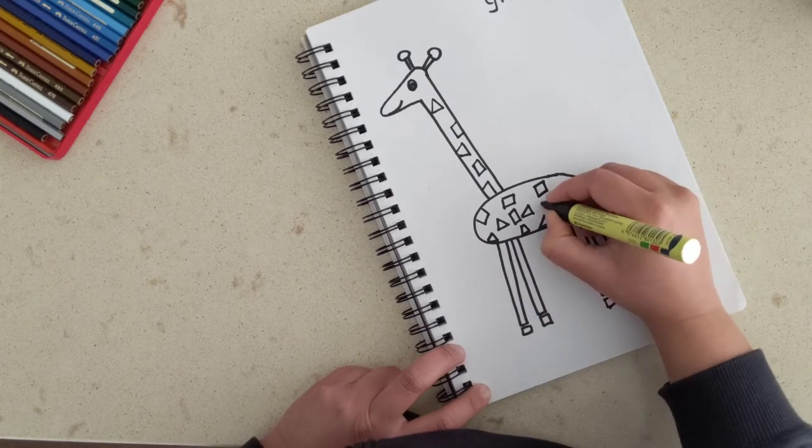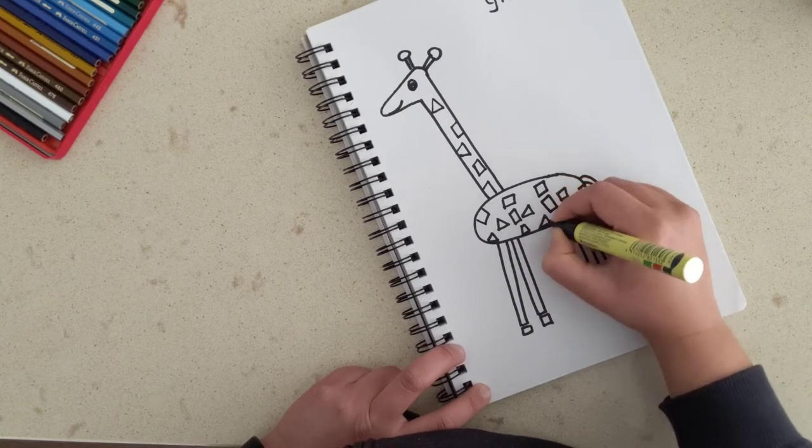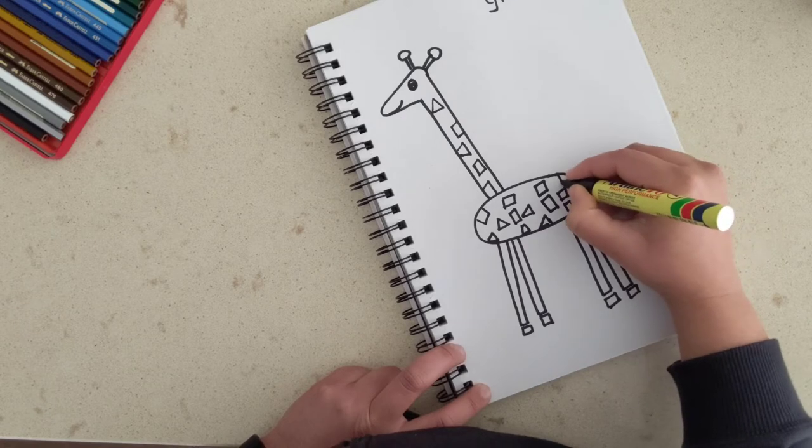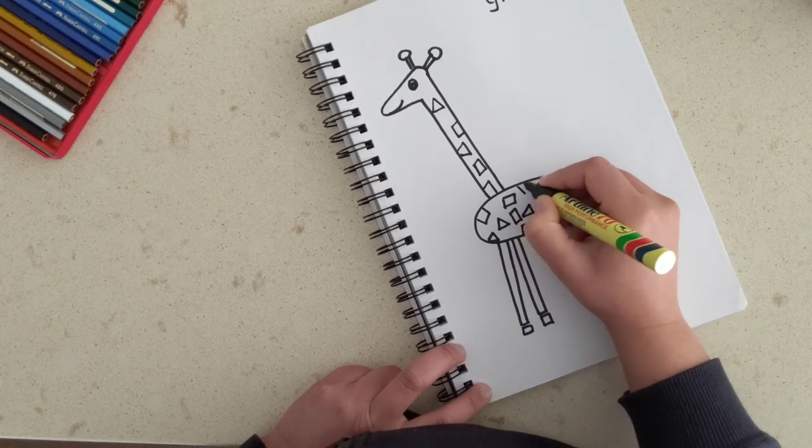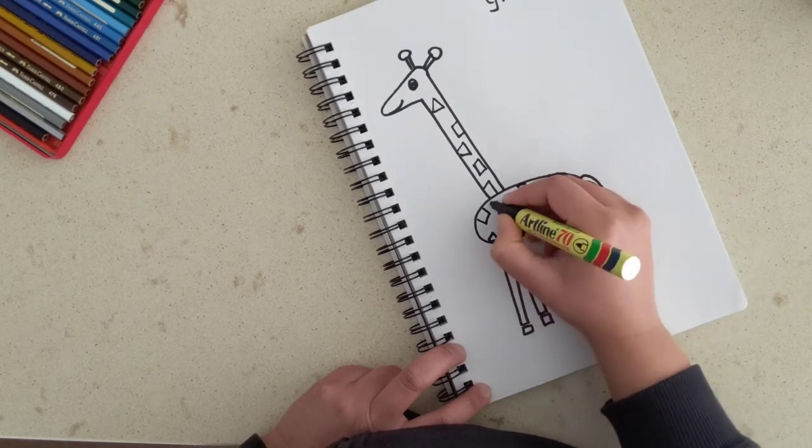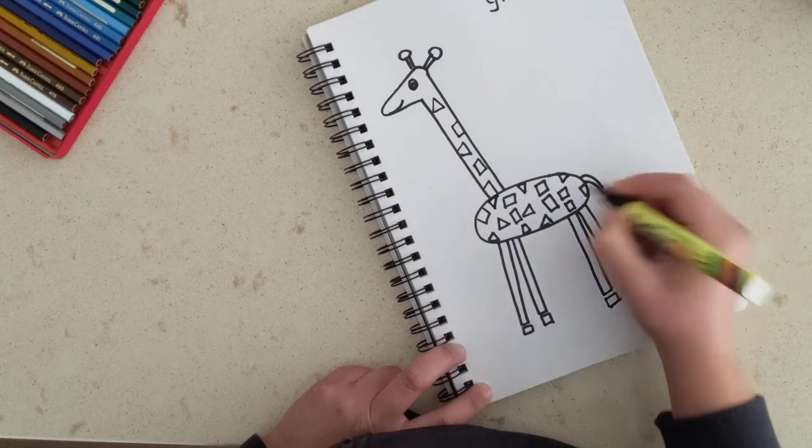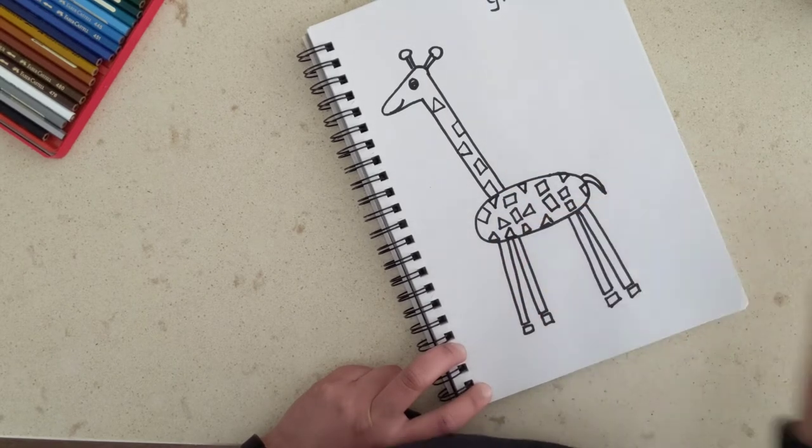Do you know what is a group of giraffes called? It's called a tower. So if you see 10 to 15 giraffes walking together, what do you call it? You say a tower of giraffes is walking together.